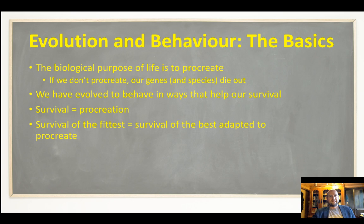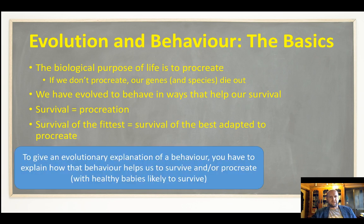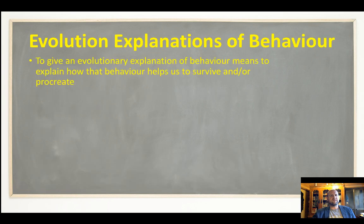When you hear the phrase 'survival of the fittest,' that simply means it's not survival of the person who can run the fastest or is the strongest, but survival of the best adapted to procreate — the best adapted to pass on their genes. To keep it really simple: to give an evolutionary explanation of behavior, you have to explain how that behavior helps us to survive and/or procreate, in other words how it helps us to pass on our genes in some way.